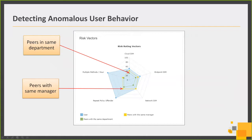What you're seeing here is our radar diagram that tells you where this user ranks in terms of different risk vectors. Many risk vectors come out of the box and others can be configured easily through the user interface by administrators. We're looking at things like repeat policy event offender, which may be a careless user; multiple methods per hour, which may indicate somebody trying to exfiltrate data; as well as other risk vectors like endpoint data in motion and network data in motion. DIM stands for data in motion, and includes DLP activity and other kinds of activity reflecting data moving within or out of the organization.